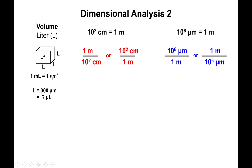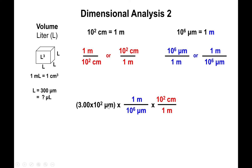We have micrometers and we want to go towards centimeters to access the 1 mL = 1 cm³ relationship. We know there are 100 centimeters in one meter and 10 to the 6 micrometers in one meter. Starting with 300 micrometers on top, we pick the fraction with micrometers on the bottom: multiply by 1 meter over 10 to the 6 micrometers, then multiply by 10 to the second centimeters over 1 meter. Micrometers and meters cancel, giving 3.0 times 10 to the negative 2 centimeters.